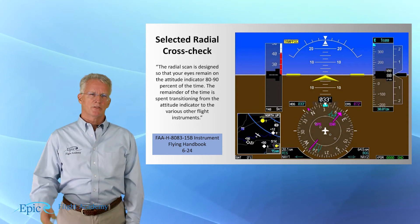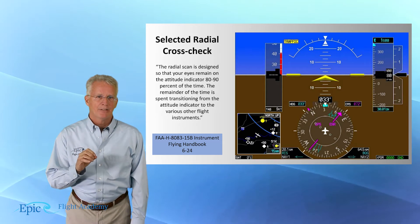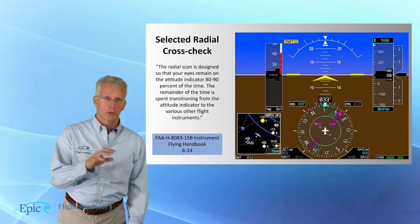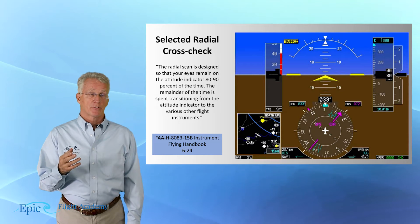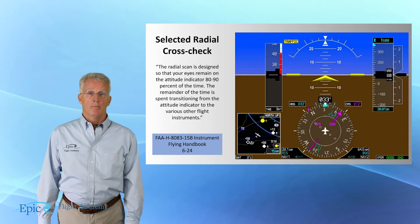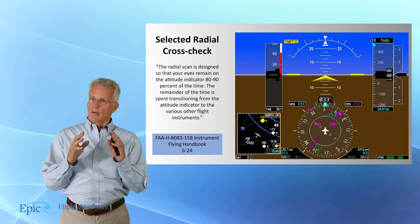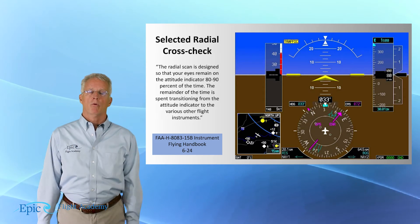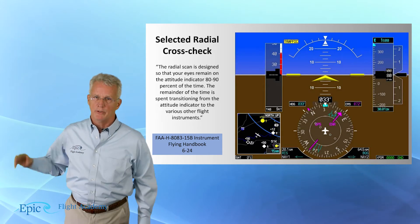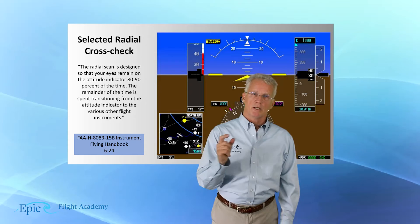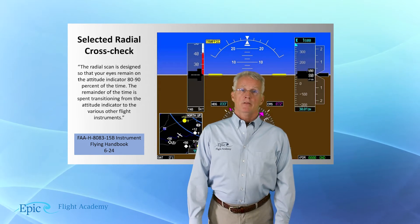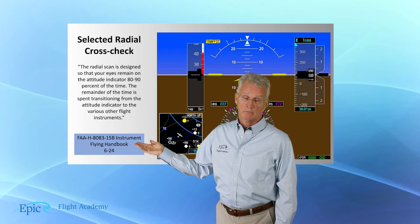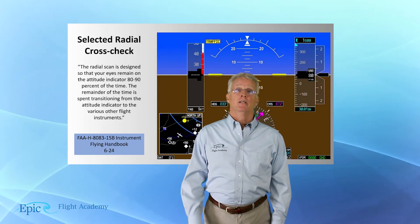The radial scan is designed so that your eyes can remain on the attitude indicator 80 to 90% of the time, with the remainder spent transitioning to other flight instruments. As we talk about scanning and controlling the aircraft on instruments, it's very important that you study the Instrument Flying Handbook — that is the FAA's handbook 8083-15B — specifically chapter 6.